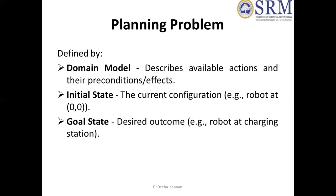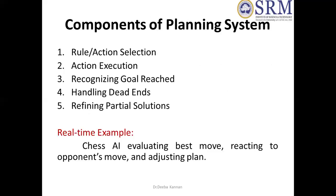There are various types of possible actions in the domain model. If you have any actions in the domain model, you can define all the actions and all possible actions. In the planning problem, you can define all possible actions and all the preconditions. You can also define the initial state and the goal state.